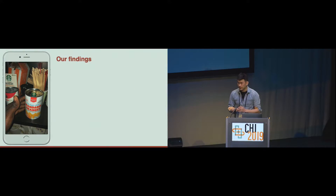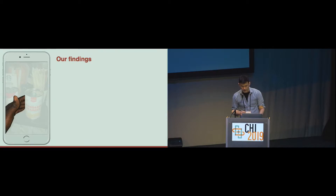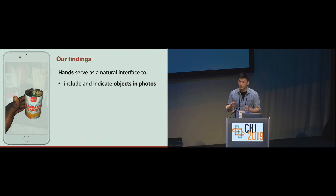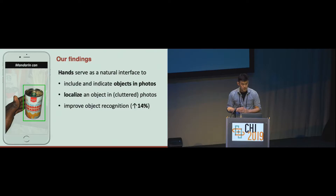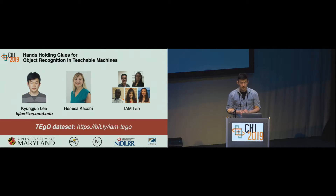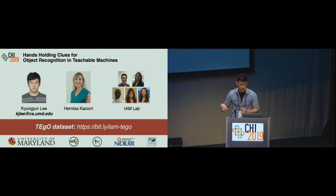Here are our findings: we found that hands serve as a natural interface to include and indicate an object in photos, especially for people with visual impairments. Hands help to localize the object, especially in cluttered photos. And we found that it improved object recognition by up to 14%. Our TAGO dataset is available online, so please go ahead and explore it, and share any feedback you have.